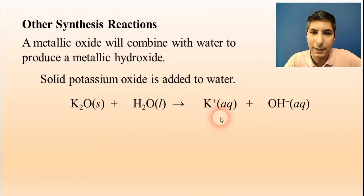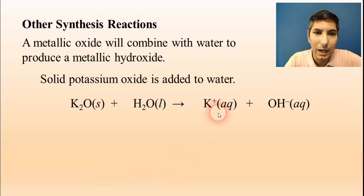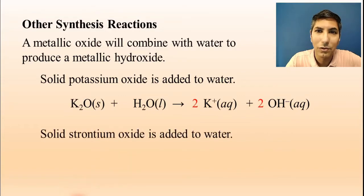Now, notice how I write this. I have to write it in ion form, because since water is present, that means we're going to have a solution. So these ions are going to be swimming around in solutions. So we have potassium ions and hydroxide ions. That's your potassium hydroxide. Don't forget to balance the equation. So we put a 2 in front of the K, and a 2 in front of the OH, and that's going to balance this equation pretty well.